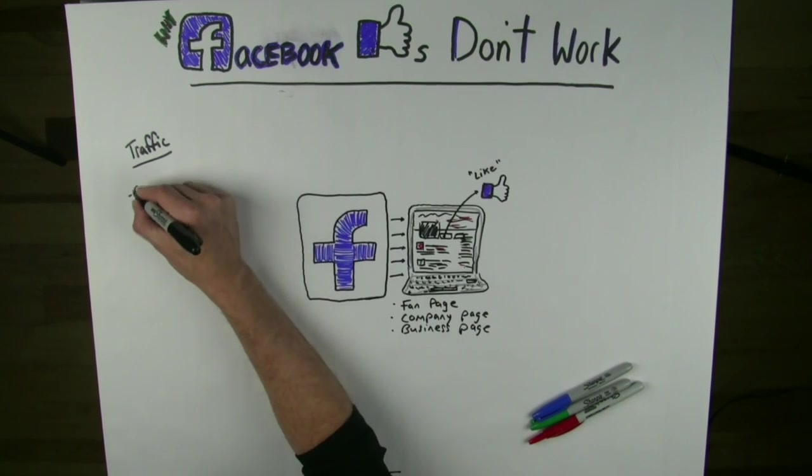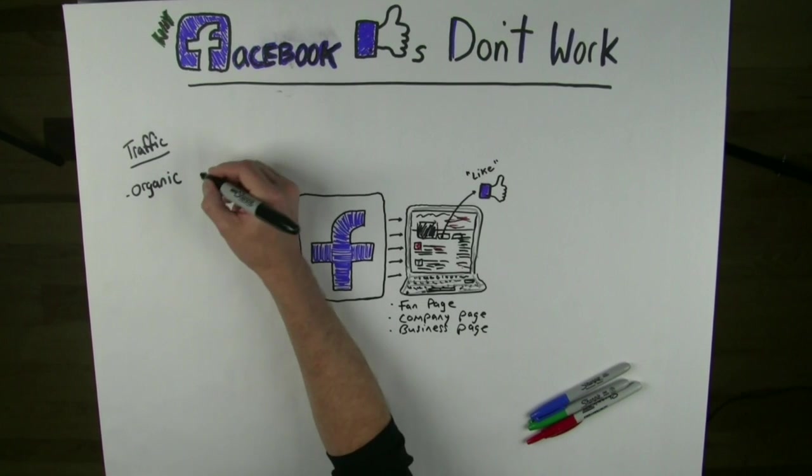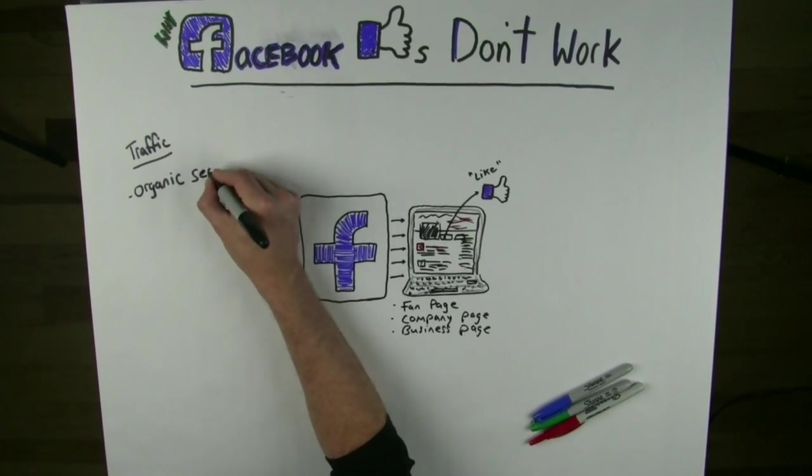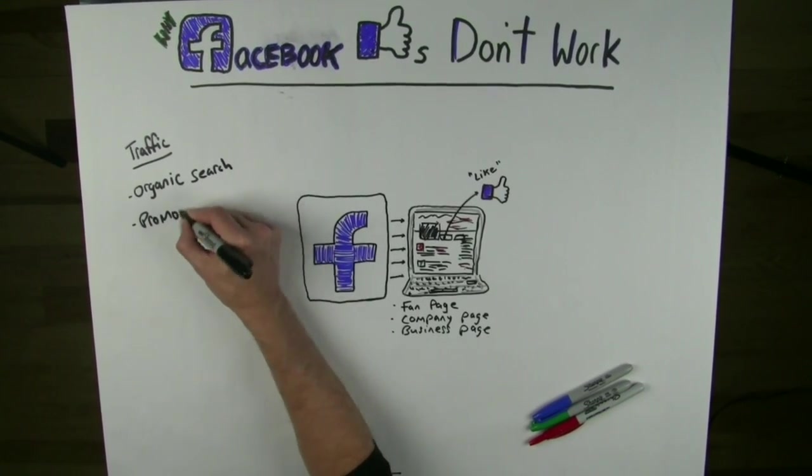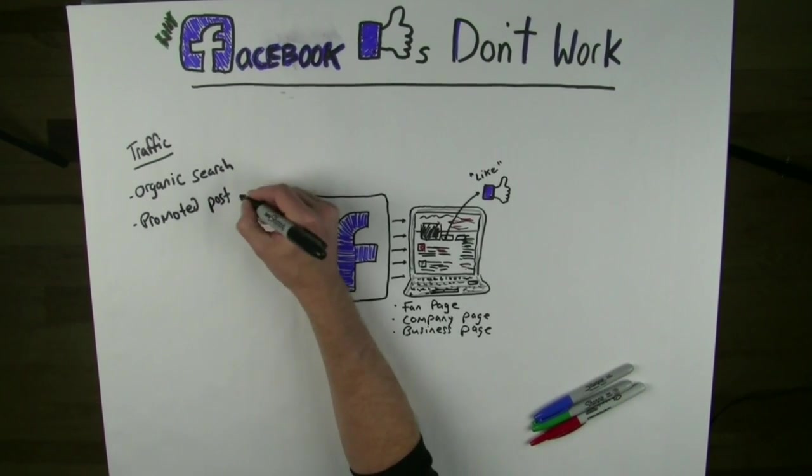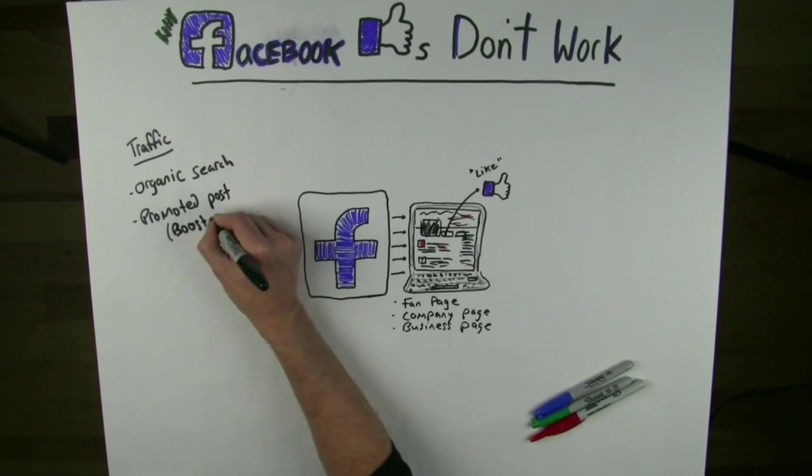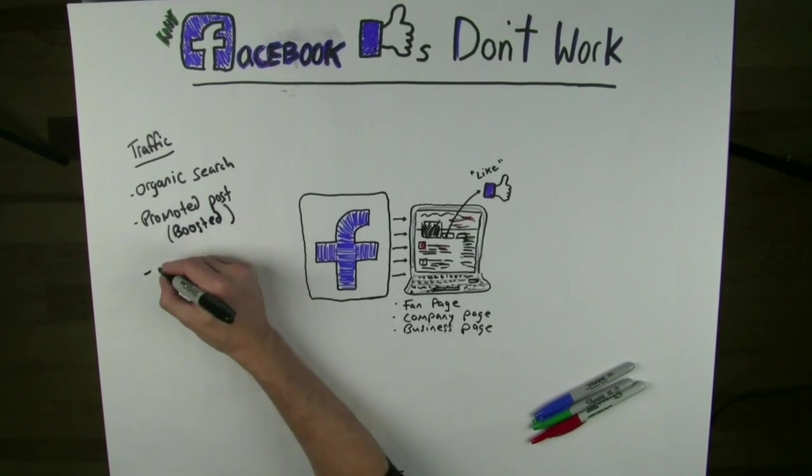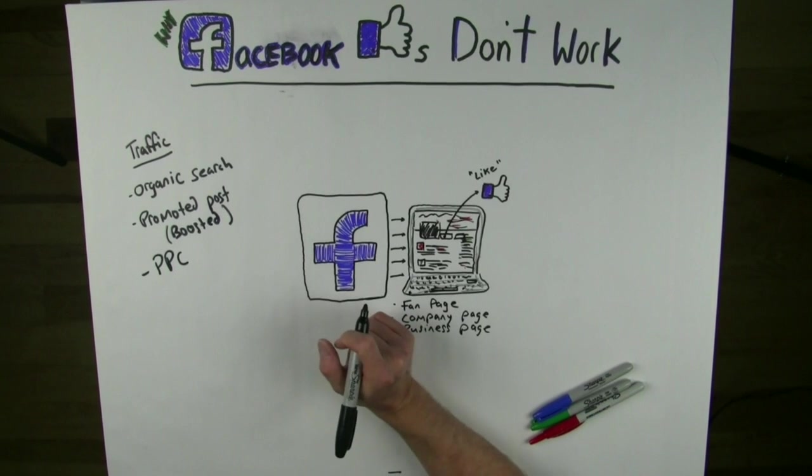So certainly traffic can go to your Facebook page through organic search, people searching for keywords and terms. You can use things like promoted posts, or boosted posts. You can actually use traditional pay-per-click campaigns, placing ads, Google pay-per-click.